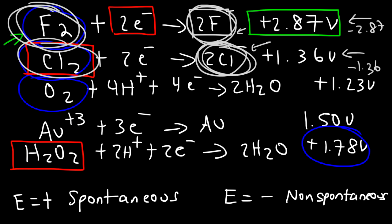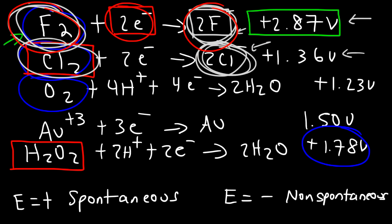Oxidizing agents like to take away electrons; reducing agents like to give away electrons. Fluoride cannot be considered an oxidizing agent because it does not want to acquire electrons, but fluorine can because it can acquire electrons. Chloride can be treated as a reducing agent because it can give up two electrons going in the reverse direction. Anything that likes to acquire electrons is an oxidizing agent; anything that can give away electrons is a reducing agent.